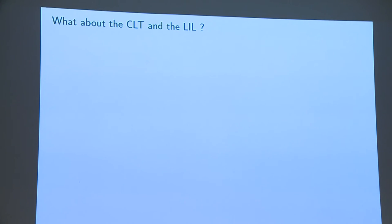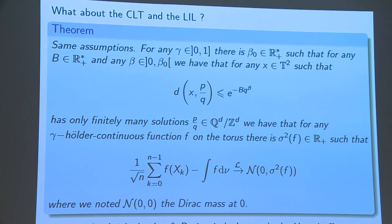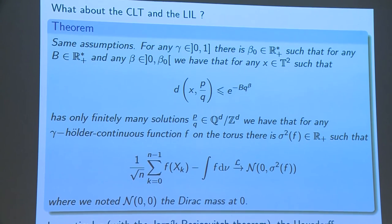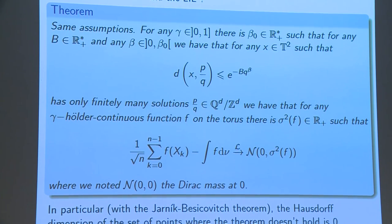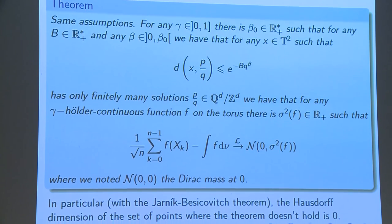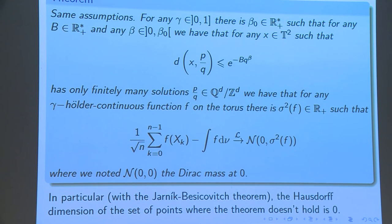So I will not keep the suspense and it works with the same assumptions. For any γ, we have the central limit theorem and the law of the iterated logarithm for γ other continuous functions, but not for any starting point x. The problem is that if you start, we saw that rational points have a very particular behavior. So you can imagine that if you start close to a rational point, you will equidistribute, but very slowly.